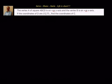Hello friends, welcome back. Hearty welcome to you. The vertex A of square ABCD is on positive y-axis and the vertex B is on positive x-axis. If the coordinates of D are 12 comma 17, find the coordinates of C.